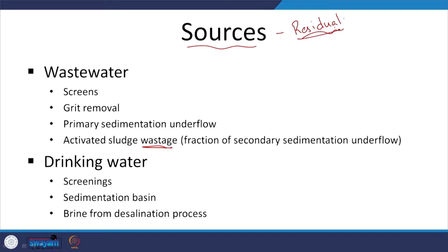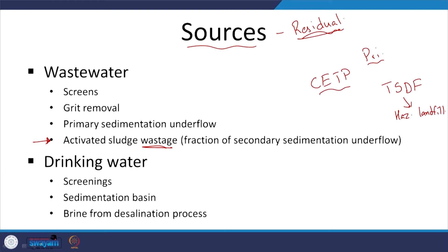In India, typically we are going to look at this. And if it is a common effluent treatment plant and you have primary treatment and sludge from that primary treatment, that sludge has to go to a TSDF — treatment storage and disposal facility — which is more or less a hazardous waste landfill. The law does not say that after the biological process the sludge has to go to a landfill, but depending upon the influent characteristics and heavy metal concentrations in the influent wastewater at this common effluent treatment plant, the sludge can have high concentrations of heavy metals.